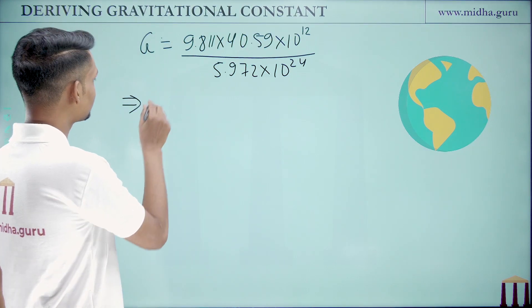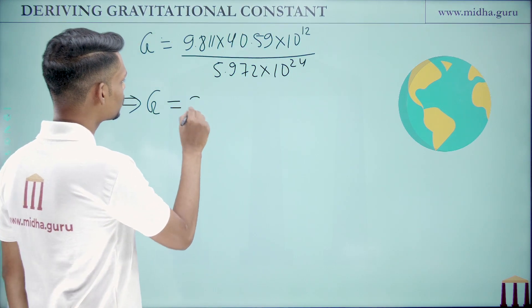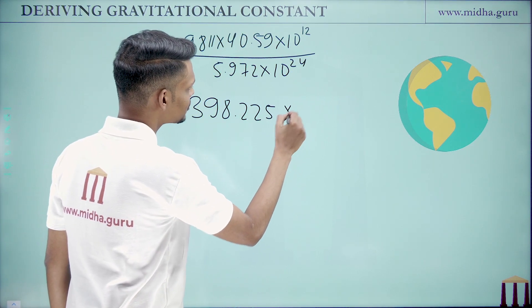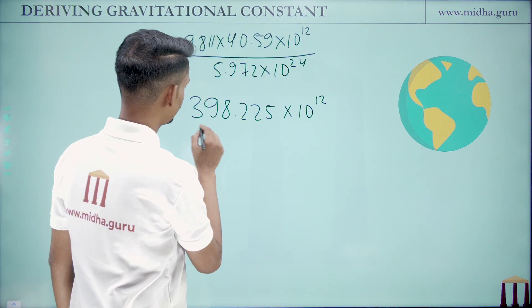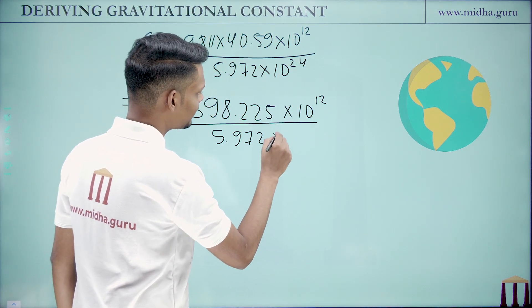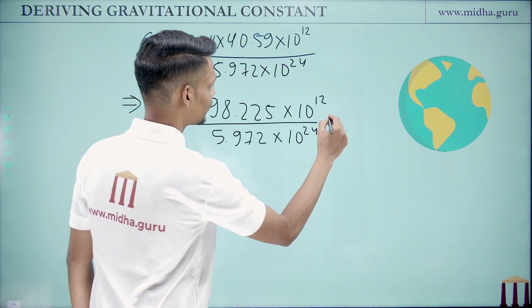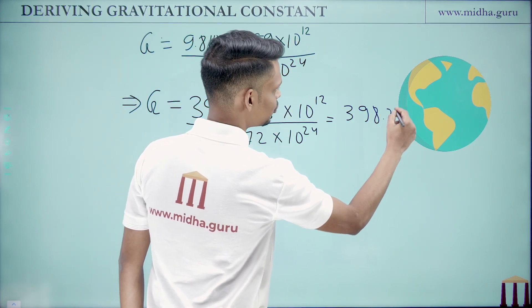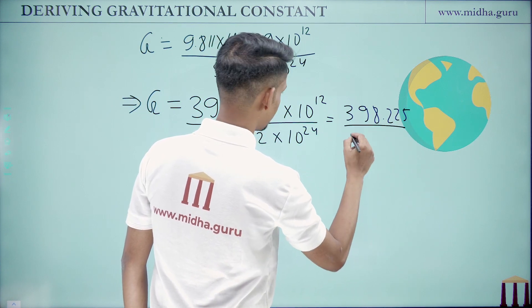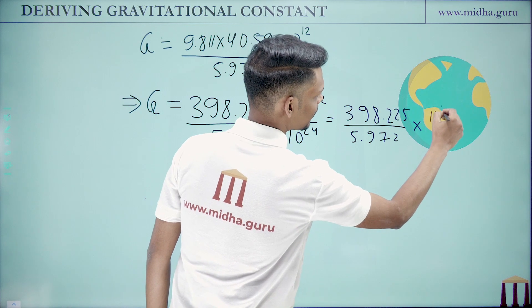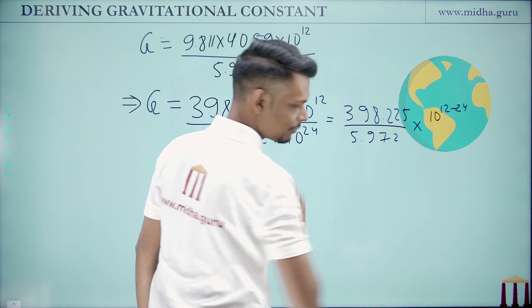Now this can be further simplified into G is equal to 398.225 times 10 to the power of 12 divided by 5.972 times 10 to the power of 24, which can further be written as 398.225 divided by 5.972 times 10 to the power of 12 minus 24.